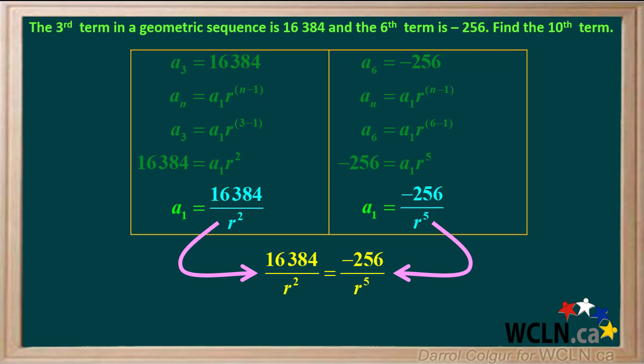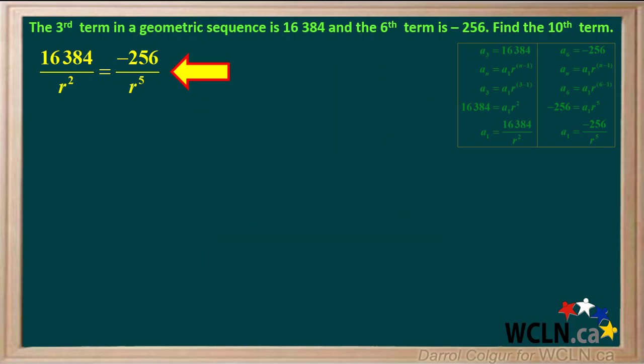Now we'll look at the sixth term: it's negative 256. Again we'll start with the equation for the nth term in a geometric sequence. Since we're dealing with the sixth term, we'll substitute 6 for n in the formula. Term a6 is negative 256 and the exponent 6 minus 1 equals 5. Solving the equation for a1, we get a1 equals negative 256 over r to the fifth. Now we have two different expressions that are both equal to a1.